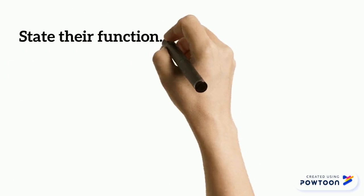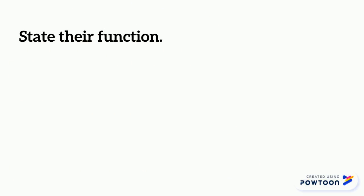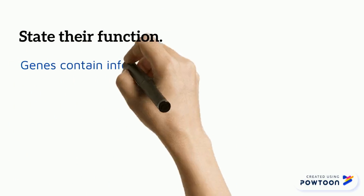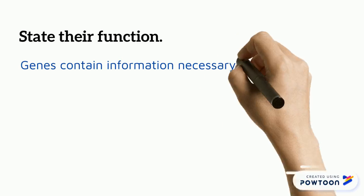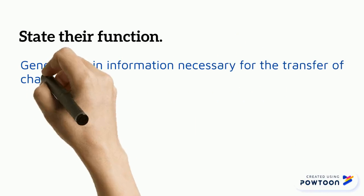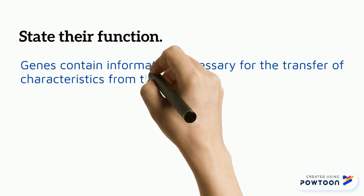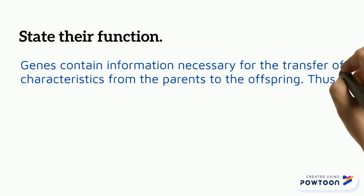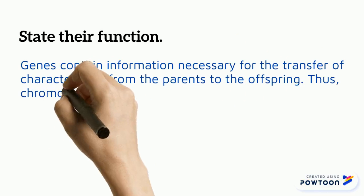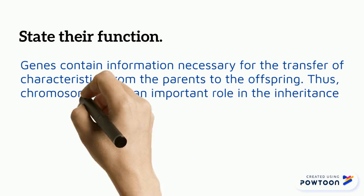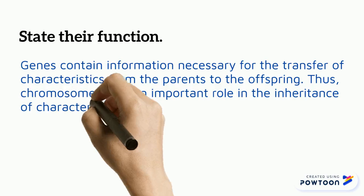The next part says, state their function. Genes contain information that are necessary for the transfer of characteristics from the parents to the new offspring. Thus, chromosomes play an important role in the inheritance of characteristics.